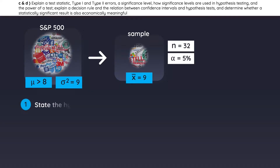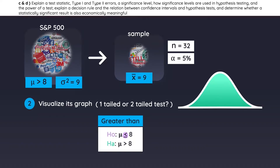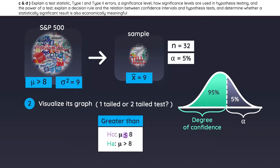Step 1 is to state the hypothesis. He believes the population's mean is greater than 8, so that's the alternative hypothesis. The opposite will be the null hypothesis. Step 2 is to visualize the graph. Since the alternative hypothesis is greater than, we have a right-tail test. The level of significance is 5%, so the degree of confidence must be 95%. The confidence interval is the safe zone, and the tail is the rejection zone.